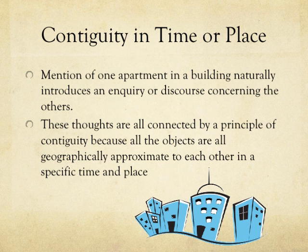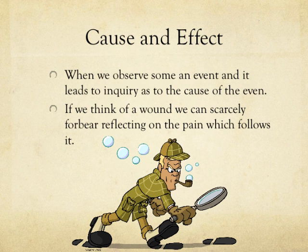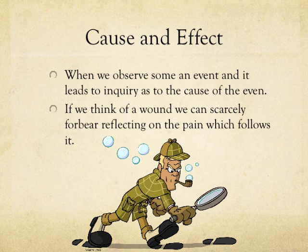And with that, we're going to move on to the last association of ideas. The third association of ideas: cause and effect. As Hume states, cause and effect is when we observe an event and it leads to an inquiry as to the cause of the event. He gives the example that when we think of a wound, we can scarcely forbear reflecting on the pain which followed it. When you see a particular cut, you can reflect on the pain that would follow — cause and effect.